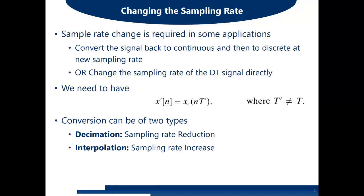Why is sampling rate change required in practical systems? Sampling rate change means either decreasing or increasing the sampling rate. We may need to decrease the sampling rate because in some practical systems, due to hardware constraints and limited resources, we cannot process the discrete time sequence in its original form, so we need to reduce the number of samples. In digital image processing and similar applications, there are cases where we want to increase the sampling rate.